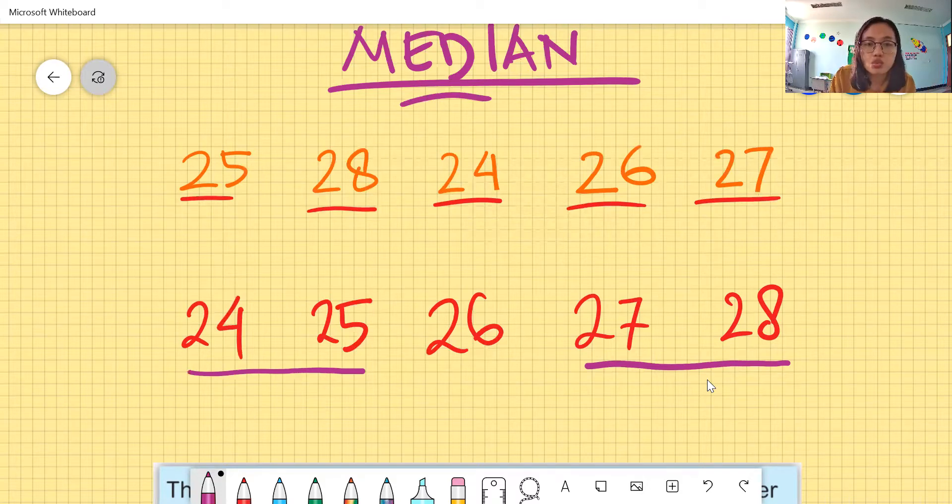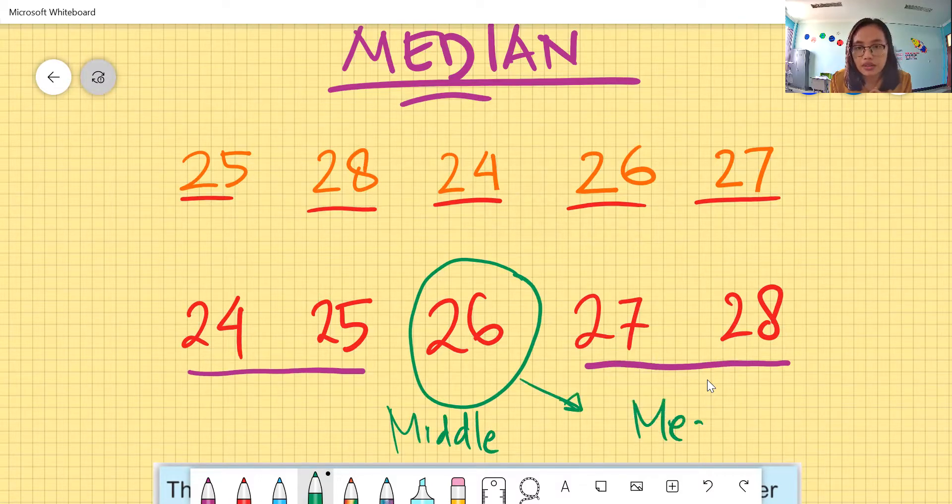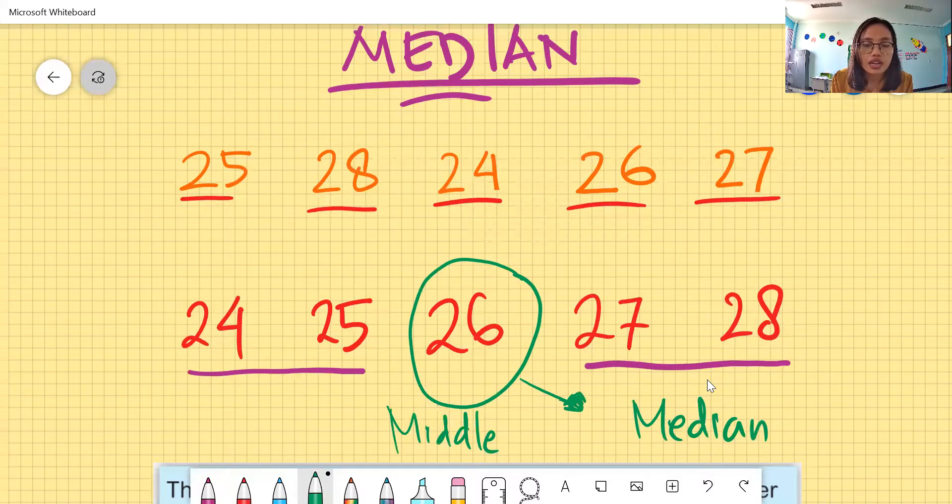And then after this, we can easily find the middle value. Jadi kalau sudah seperti ini setelah kita bagi, kita langsung dapat, the middle value of this number is 26. So, the middle is 26 and this becomes the median. Atau nilai tengah. That's how to find the median of a set of data.